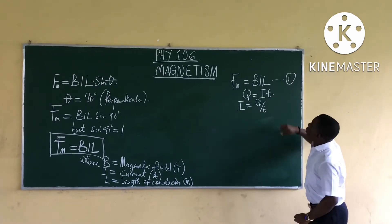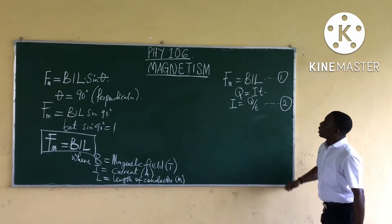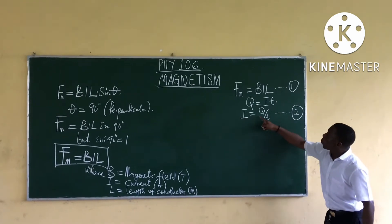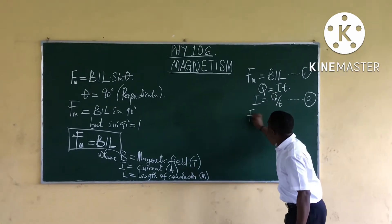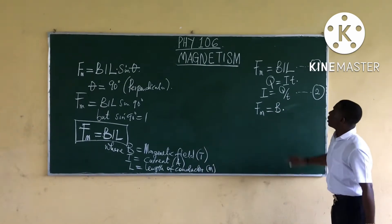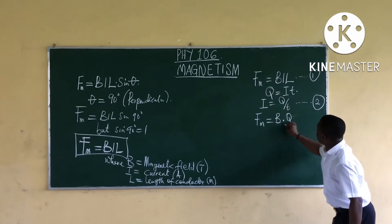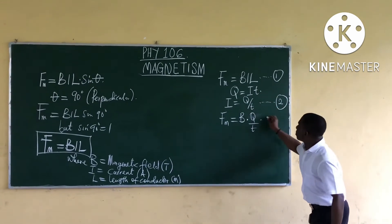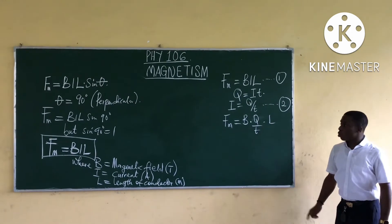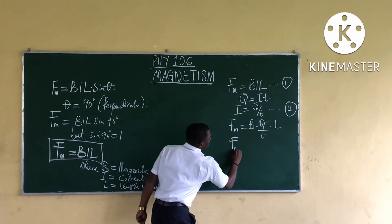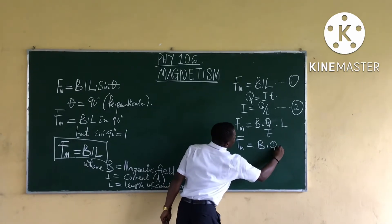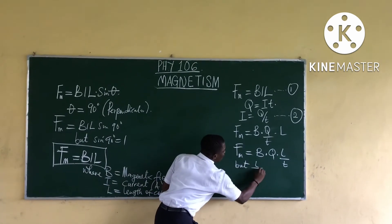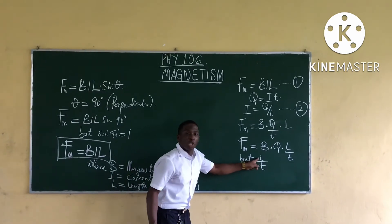Call F = BIL equation 1 and I = Q/T equation 2. Substituting equation 2 into equation 1 in place of I, we get: magnetic force = B × (Q/T) × L, which rearranges to magnetic force = B × Q × (L/T).